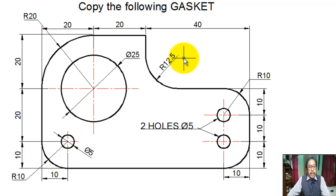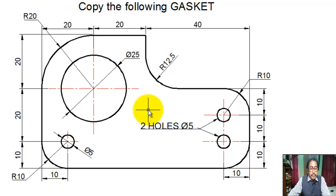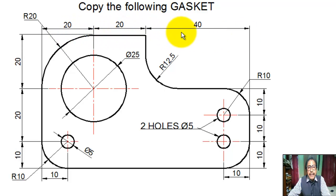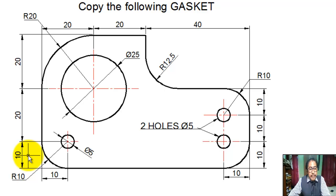Hello student. Now we copy the figure of a gasket on AutoCAD software. The overall length of the drawing is 20 plus 20 plus 40, which equals 80 mm. The overall width of the drawing is 20 plus 20 plus 10, which equals 50 mm.